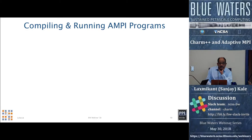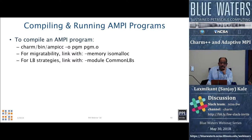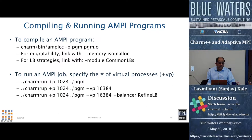To compile and run an AMPI program, you use our MPI wrapper — AMPICC — which knows the appropriate switches. If you want migratability, link with memory isomalloc; if you want load balancing strategies, link with module comlbs. Then to run it, instead of mpirun you use charmrun, and you get to specify virtual ranks as well as actual ranks. For example, you can run on 1,024 physical cores pretending to be 16,000 virtual ranks, and use a particular load balancer for balancing work across processors.